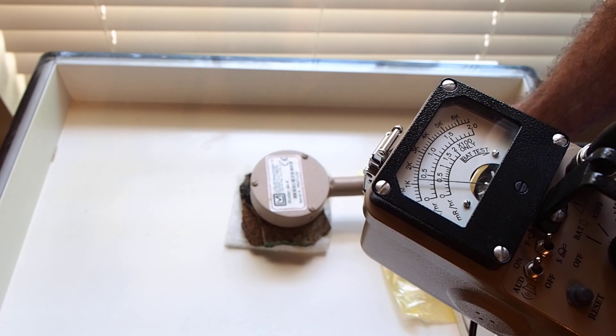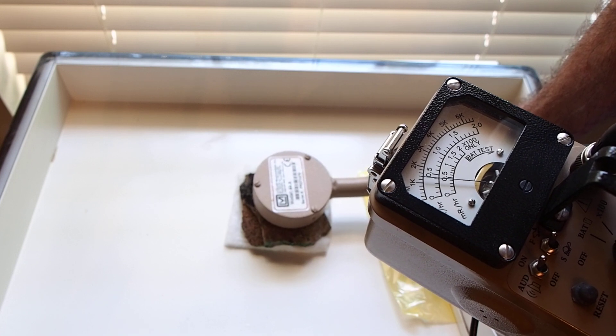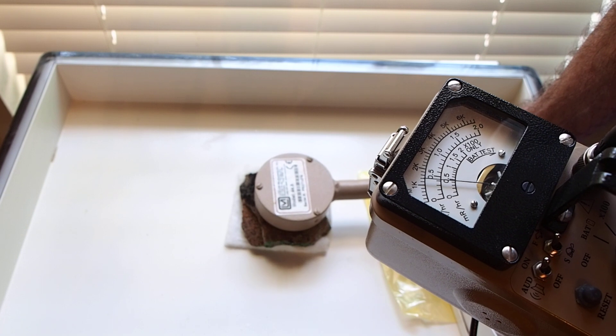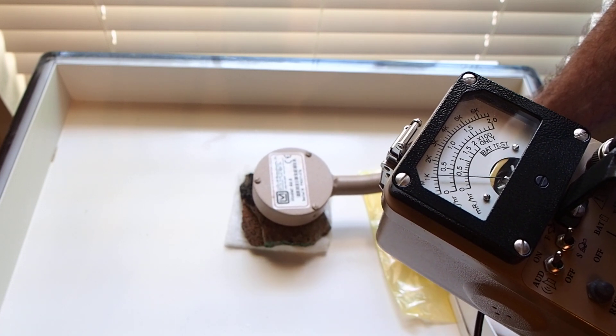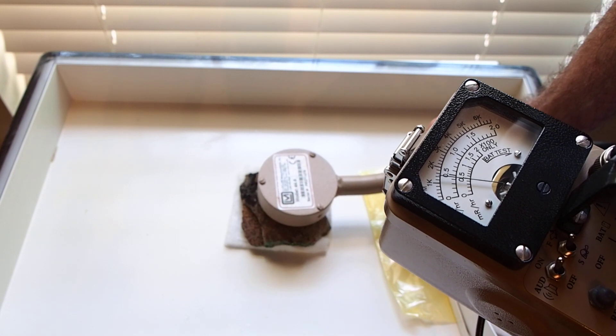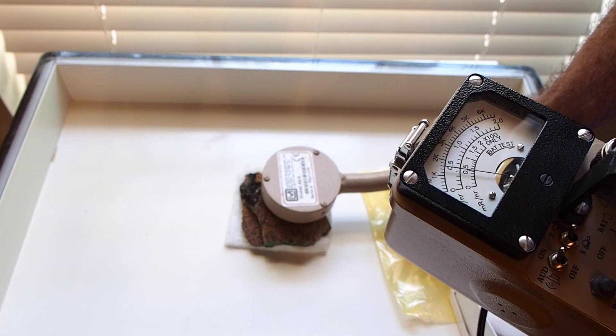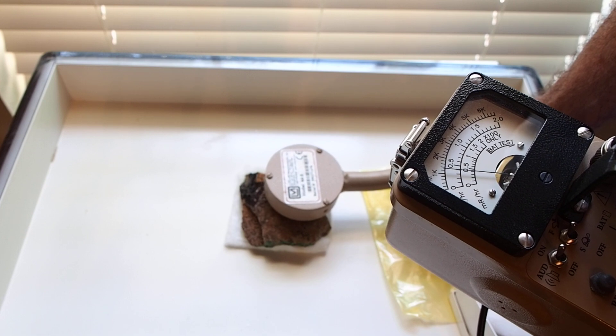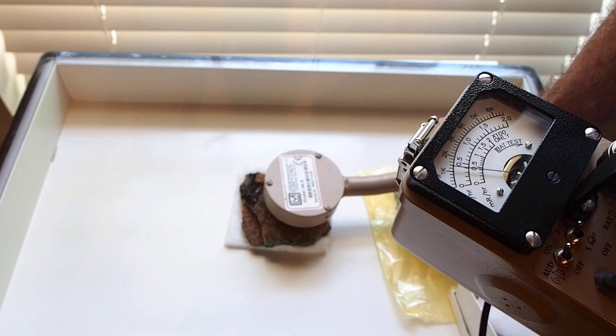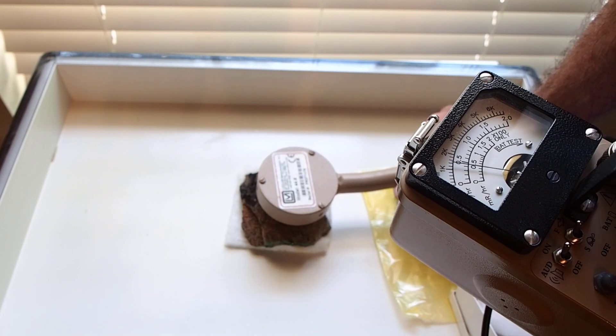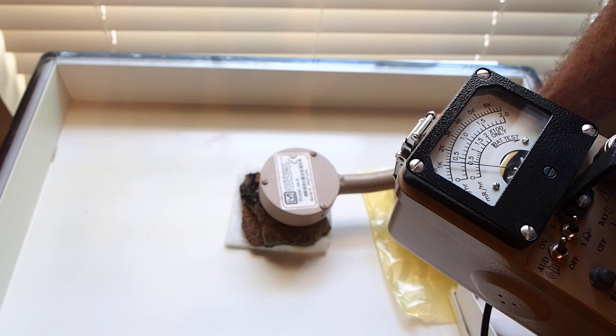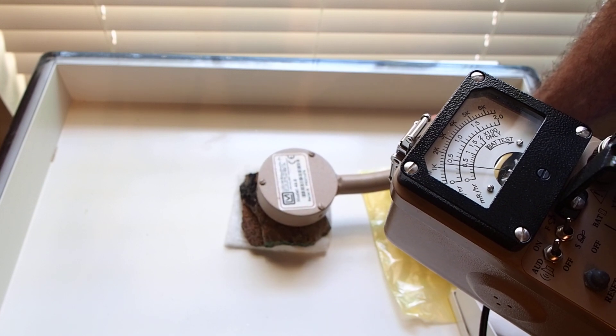So down from 220,000 counts per minute to about 1,500 counts per minute by simply turning the rock over and having the crystals face away from us. So what that tells me is some of the gamma radiation is being absorbed or shielded by this rock. And some of the radiation that we were detecting was beta, which is definitely being blocked by this rock.